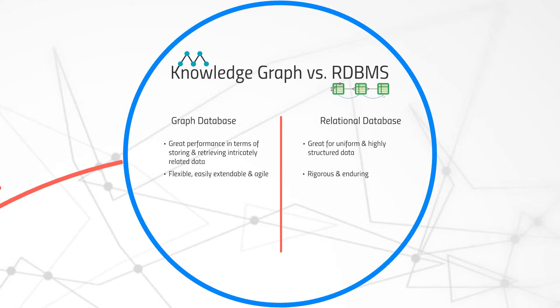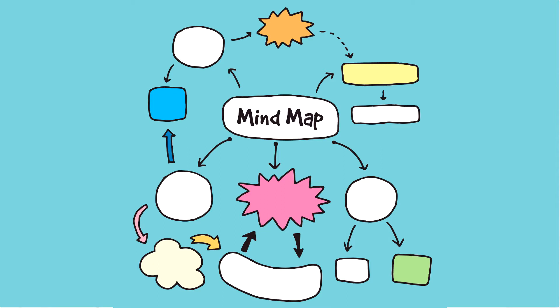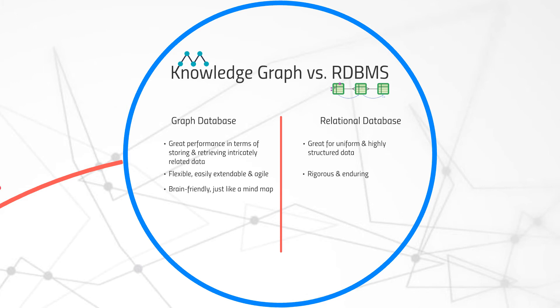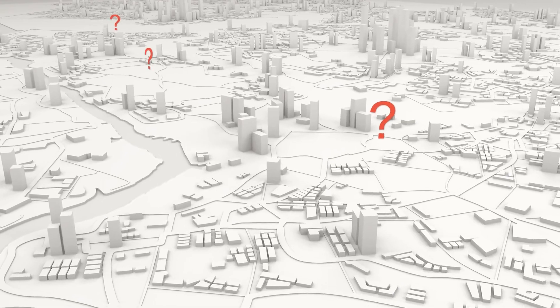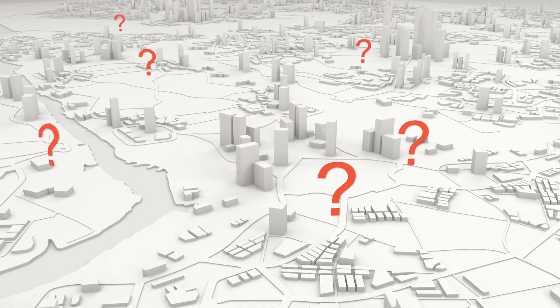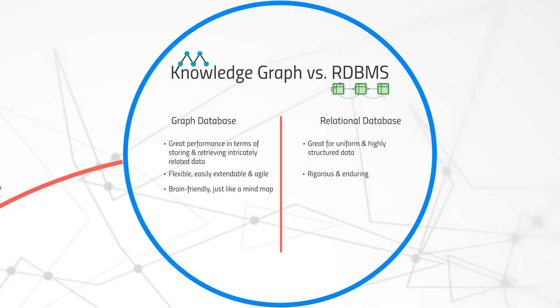What's also true is that architecting graph databases is friendly to the human brain — we do it all the time, just like we'd sketch out mind maps to capture relationships between various things. As a result of the brain-friendly nature of graph databases, the way we query the data feels very natural. On the other hand, architecting relational databases requires quite specialist technical skills, and querying the data and table joins efficiently is actually pretty technical.